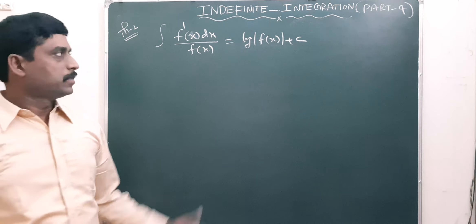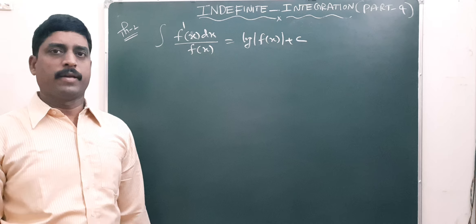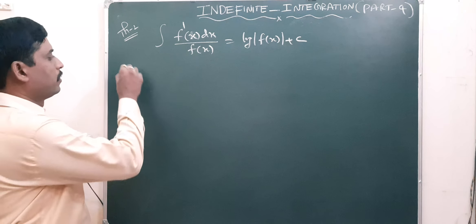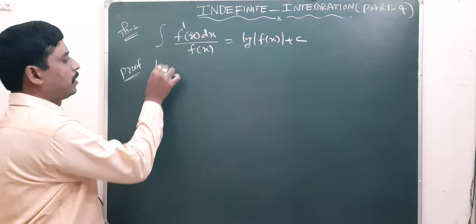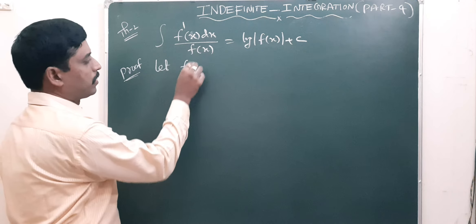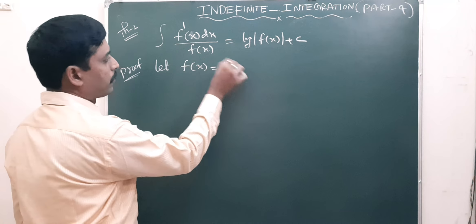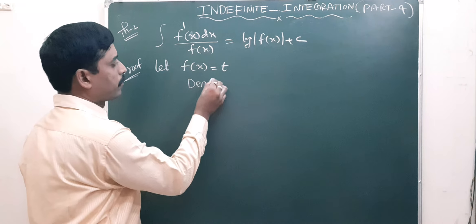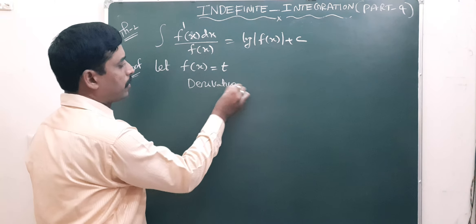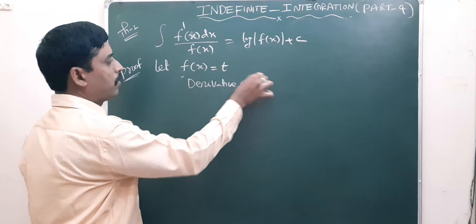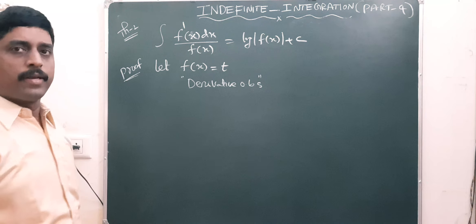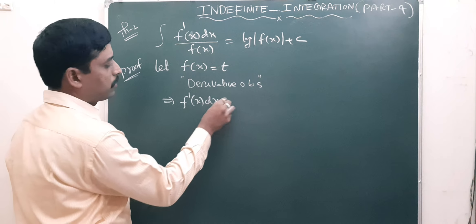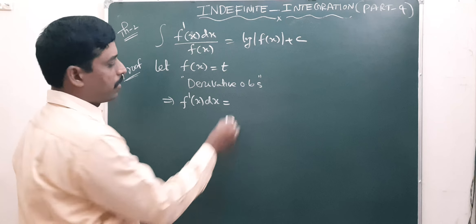Now the second theorem: integral of f'(x) dx by f(x) is equal to log mod f(x) plus c. Let us take f(x) equal to t. Now derivative on both sides: derivative of f(x) gives f'(x), and f'(x) dx is equal to dt.